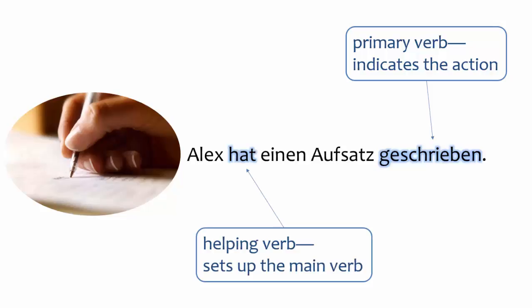The helping verb is conjugated for the subject. The helping verb is called a helping verb because it helps, or supports, or sets up the primary verb at the end of the clause. Don't be confused by the fact that the helping verb is conjugated in the present tense. The combination of a helping verb and a past participle means that this sentence is in the past.